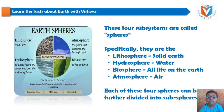These 4 subsystems are called spheres. Specifically, they are the lithosphere, which means solid Earth; the hydrosphere, which means water; the biosphere, which means all life on the Earth; and the atmosphere. Each of these 4 spheres can be further divided into subspheres.